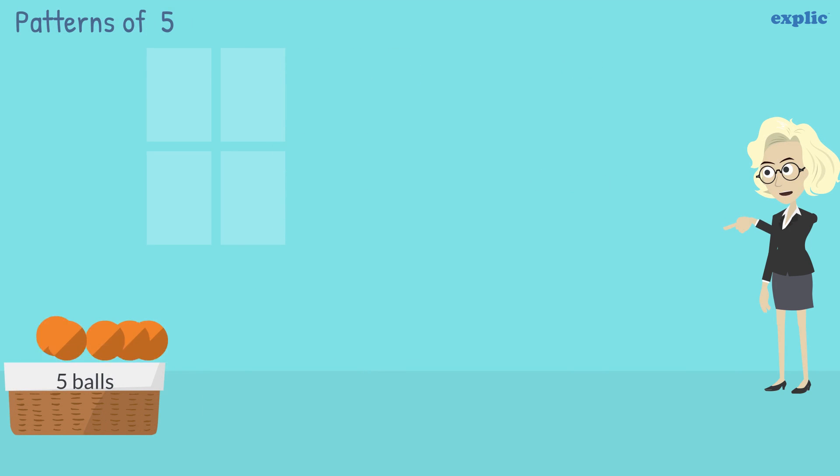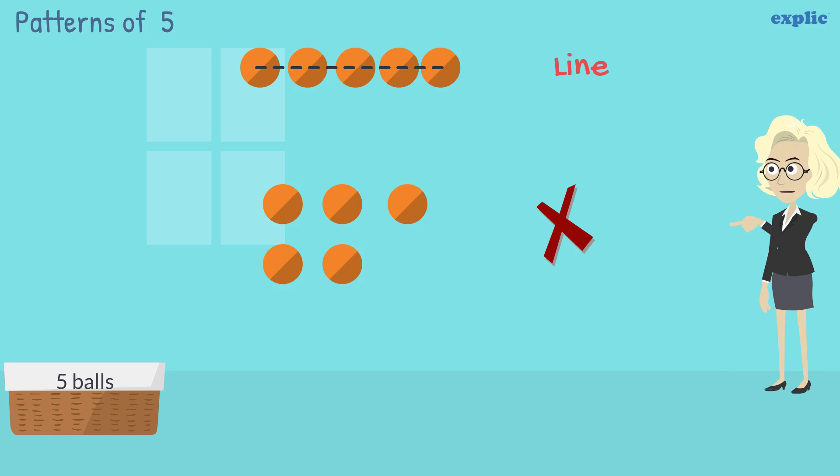Number 5 can be arranged as a line. Can you make a triangle, square or rectangle with 5 balls? No, it's not possible.